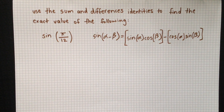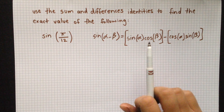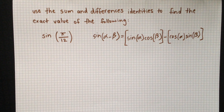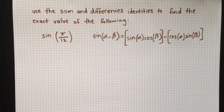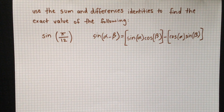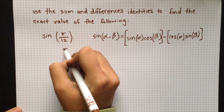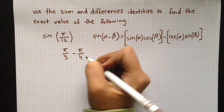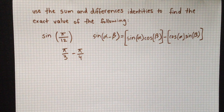So we have to find two angles, alpha and beta, that subtract to equal pi over 12. There are two ways to go about doing this: you can either guess and check, or you can convert this to degrees and easily see two angles whose difference equals this. The two angles are pi over 3 and pi over 4, and their difference equals pi over 12.